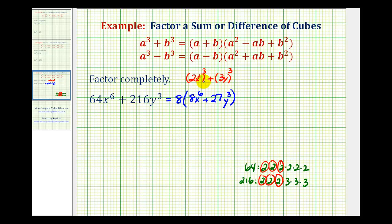Looking at our binomial written in this form, referencing our formula, this helps us to recognize that a equals 2x^2, and b equals 3y.